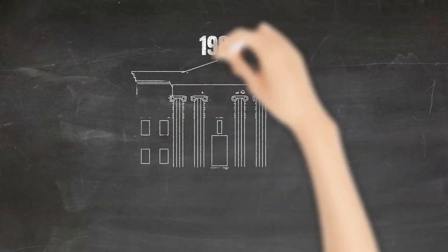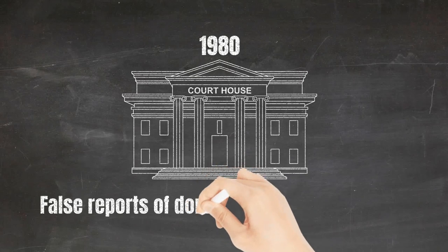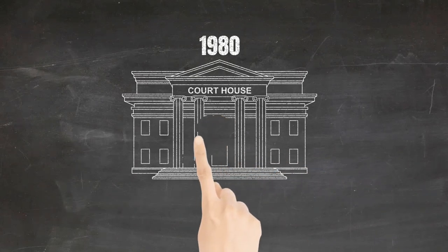Since the 1980s, family law courts have been built around a flawed and dangerous theory, now debunked, that assumes that most reports of domestic violence and abuse are false.